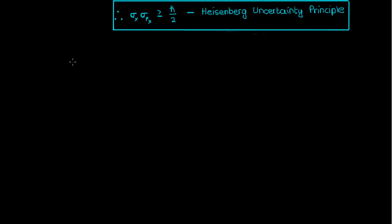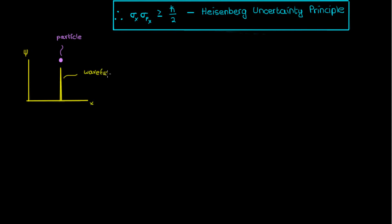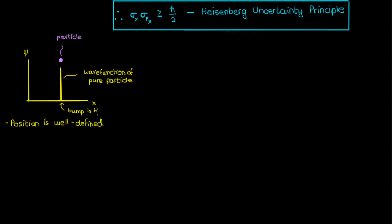One way to explain the Heisenberg uncertainty principle is to think of wave-particle duality. If I have a pure single-particle system, which I'll represent with a bump on the wave function, then it's fairly easy for me to localize that particle's position because its position is well defined. If you were to ask me where the bump is — the bump representing the particle — I can tell you quite precisely, so the position is well defined and the uncertainty in position will be very small for this bump wave function.